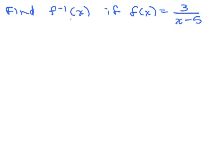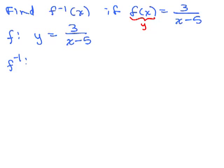Here's another one: find f inverse of x if f of x equals 3 over x minus 5. Try this on your own first. We start by rewriting f as y equals 3 over x minus 5, replacing f of x with y. For the inverse, we switch the x and y variables, giving x equals 3 over y minus 5. That is the inverse, but we want to write it as a function.